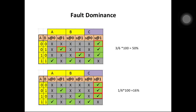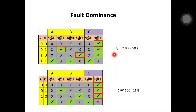Now what is meant by fault dominance? By using the 0-0 combination I can achieve stuck-at-1 at node C. By using the 0-1 combination I can achieve stuck-at-1 at node A and also stuck-at-1 at node C. By using the 1-0 combination I can achieve stuck-at-1 at node B and also stuck-at-1 at node C. So for each pattern I can recognize a different fault, giving a total test coverage of 50 percent for these 3 faults.